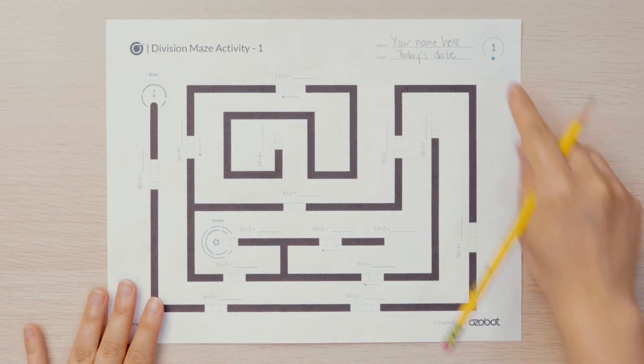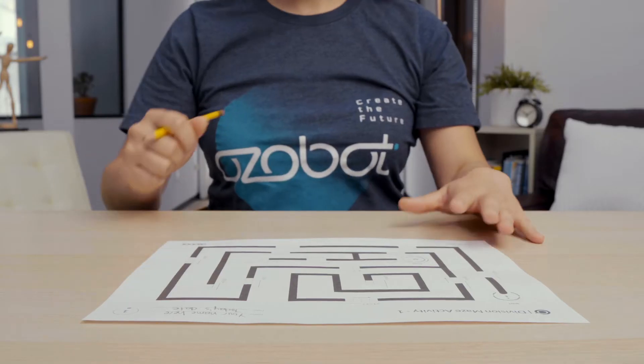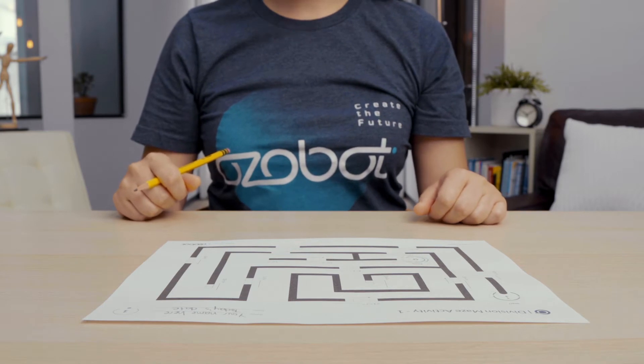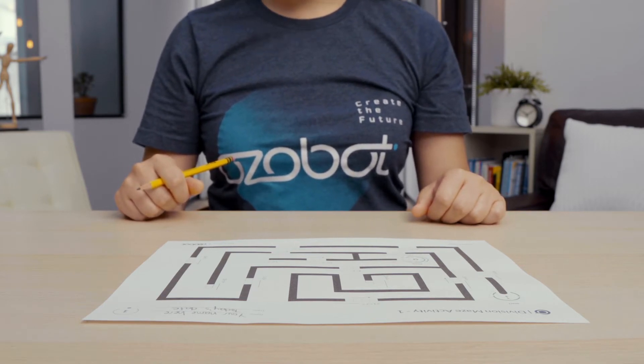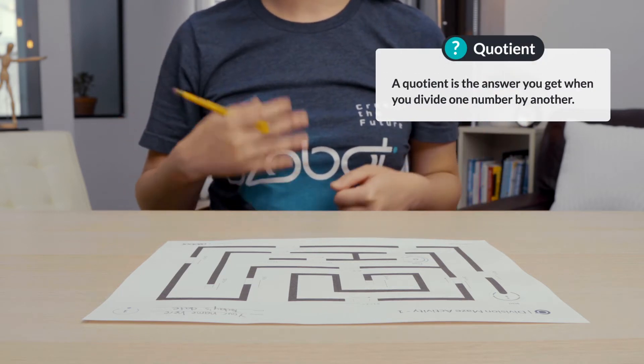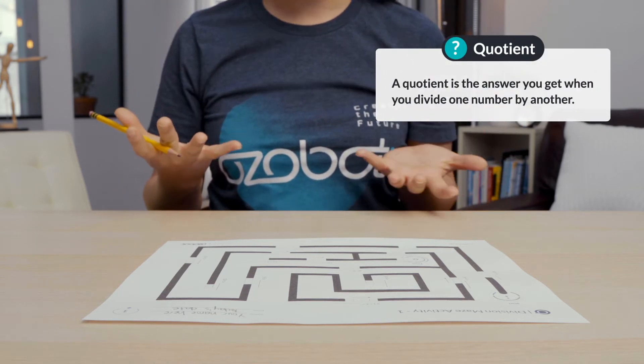Find Division Maze Activity page 1. Let's go through the first two division facts to get you started. You will be finding the quotient. A quotient is the answer you get when you divide one number by another.